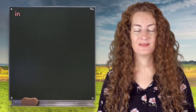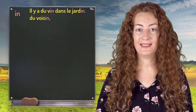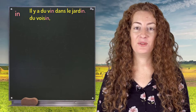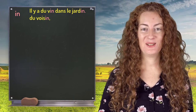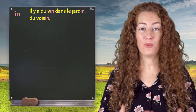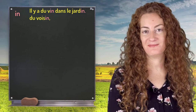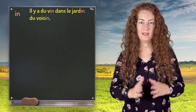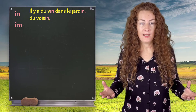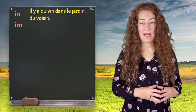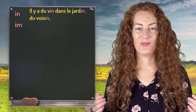Let's see an example: Il y a du vin dans le jardin du voisin. I advise you to write this sentence and repeat it. Il y a du vin dans le jardin du voisin. You can also write this sound E-M. We put M just before the letter B and P.